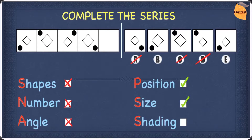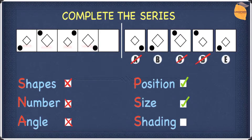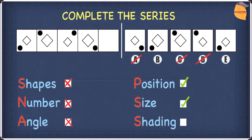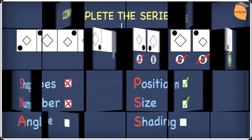In terms of size, the size changes for the diamond — from small it gets large, then small, then large. If you continue the pattern, it must get smaller next time. Out of B and E, which diamond is smallest? It's obviously E. This means our answer to this question is E. I hope you understood everything so far. Now let's go on to the next one.